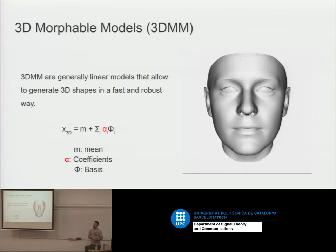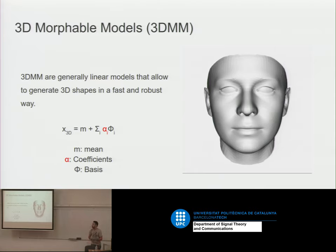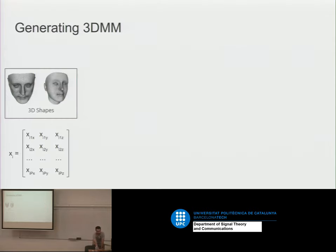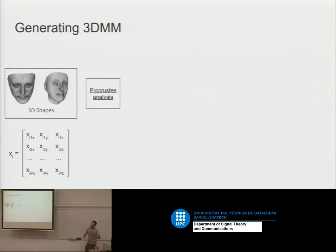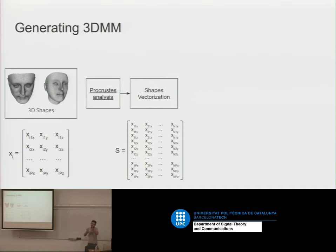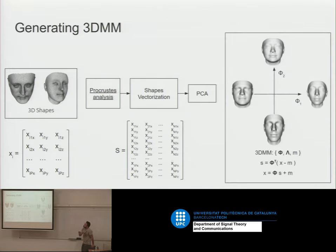How do we obtain that mean and those bases? I need data — not as much as to train a deep learning model. Maybe for that case you could do it with 200 samples. The procedure is: if I have different shapes, I put them in a row vector forming a matrix. I need to do Procrustes analysis, which means aligning all of them. Once I have the aligned shapes, I put them all in a matrix and compute principal component analysis, which is the eigendecomposition of the covariance matrix. I obtain the eigenvalues and eigenvectors — with that I have everything to work with a morphable model.